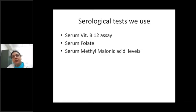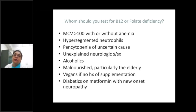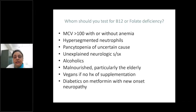Not all patients agree to an invasive procedure, so we can also do serological tests: serum B12 assay, serum folate, and serum methylmalonic acid levels. When should you order these? When MCV is more than 100 with or without anemia, hypersegmented neutrophils, pancytopenia of uncertain cause, unexplained neurological problems, alcoholics, malnourished individuals, vegetarians without supplementation, and diabetics on metformin with new onset nephropathy — in these groups you can straight away resort to serological investigation.